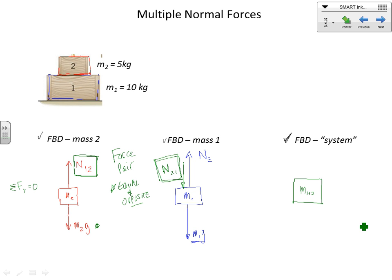For the system as a whole — m1 plus m2, and since we know the masses are five and ten I'll write it as m15. I'll call the individual weights m5g and m10g to keep my notation consistent. There's also a normal force exerted by the earth on the system. This normal equals m10g, and this normal equals m15g.